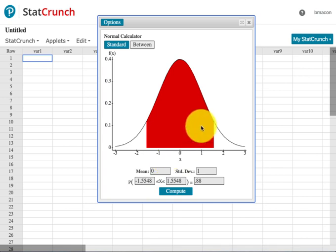Obviously, as I already mentioned, if there's 0.88 in the middle, then there's 0.12 collectively in both tails. Those would be my critical values using the Between button.